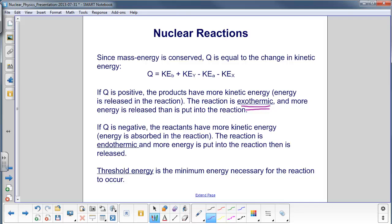If Q is negative, the reactants have more kinetic energy, which means energy is absorbed in the reaction. This gives you an endothermic reaction, and more energy is put into the reaction than is released. So that's not a very good way to generate energy if you were looking for an energy source, because you're putting more energy in than you're getting out. Threshold energy is the minimum energy necessary for the reaction to occur.